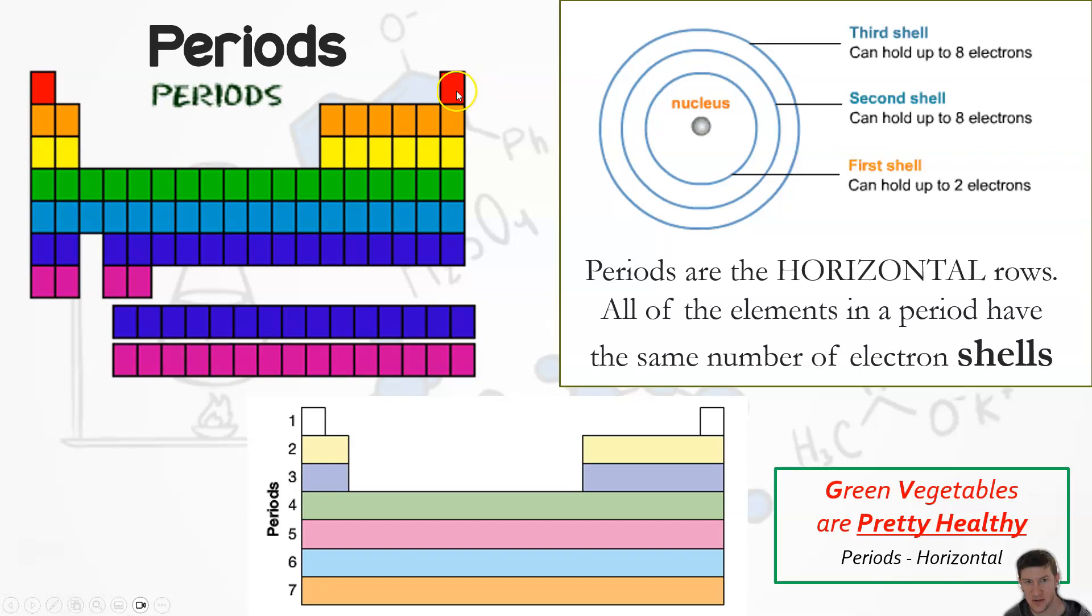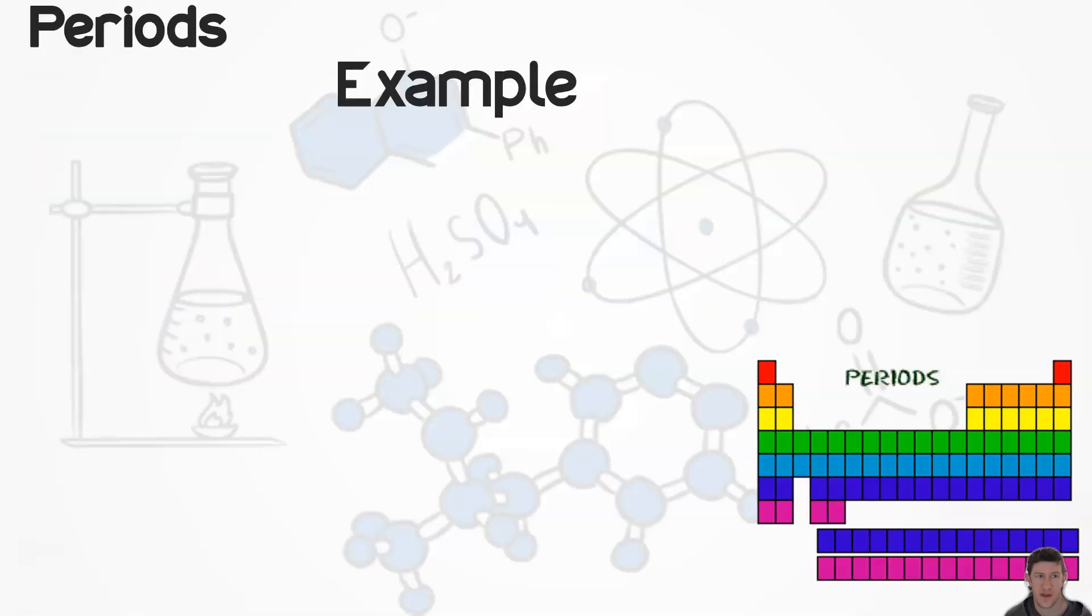But you have one electron in it, in that shell. Or in this case, sorry, you have - it's a bit weird with helium - but it's got a full shell. It's got one and it only has one in it, but that checks out because it only contains the one, so it's all good.